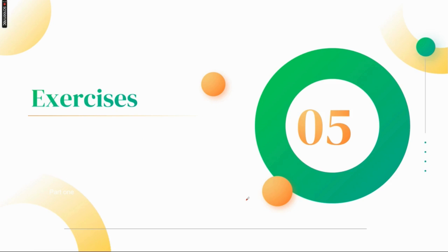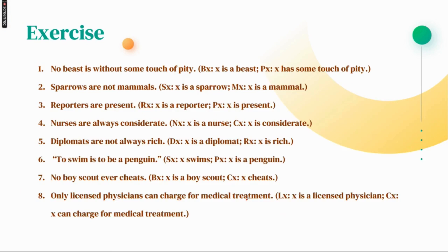Let's see the first question: 'No beast is without some touch of pity.' Here, X is a beast and X has some touch of pity — which is already given in the question. So again, this is which proposition? Don't get confused — even though 'no' is given here, it is not in the standard form. This is actually an A proposition.